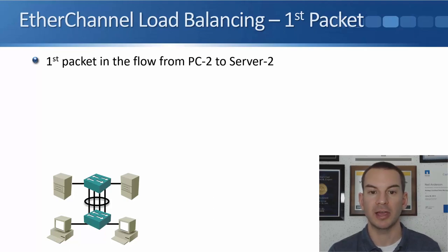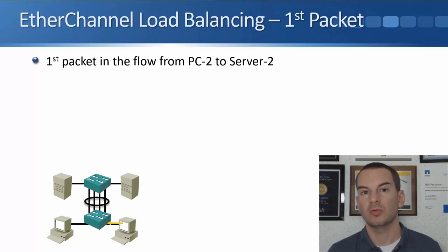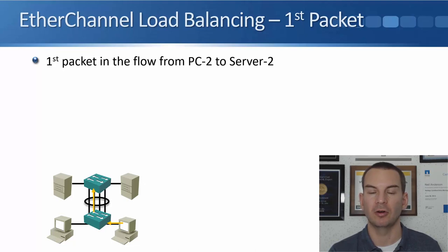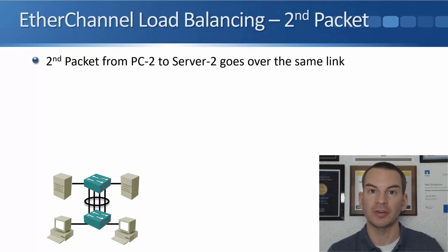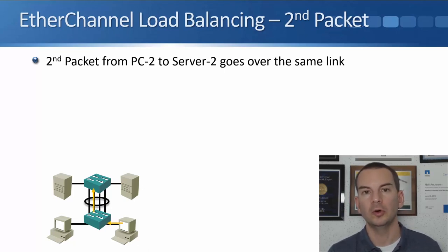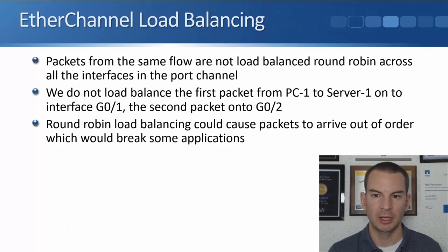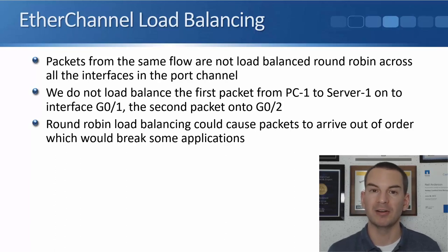For the second flow from PC2 to Server 2, the switch uses its algorithm to decide which interface to load balance it onto — GigabitEthernet 0/2 in this example. The second, third, fourth, and subsequent packets in that flow are all load balanced onto the same interface.